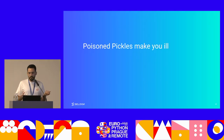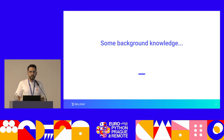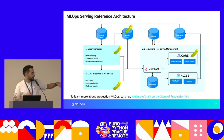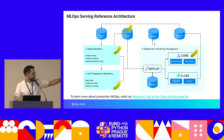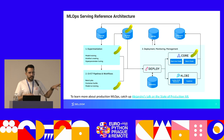Pickles may be harmful — but how harmful could they be? We're going to see an example of how these vulnerabilities could be exploited in the real world. First, some background on ML serving architecture: regardless of the framework you use, it generally looks like this — starting with some training data, your data science team experiments and trains artifacts, evaluates them, and once they're happy, that artifact — which may be a pickle — goes into an artifact store.